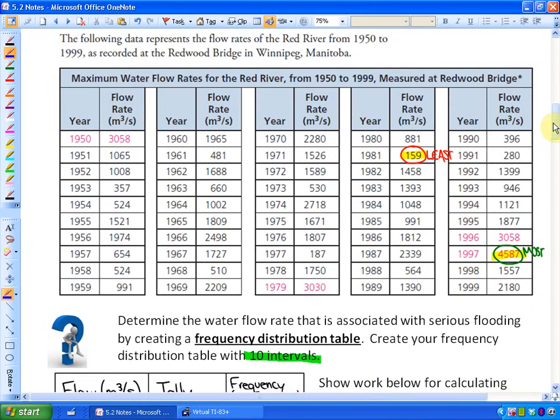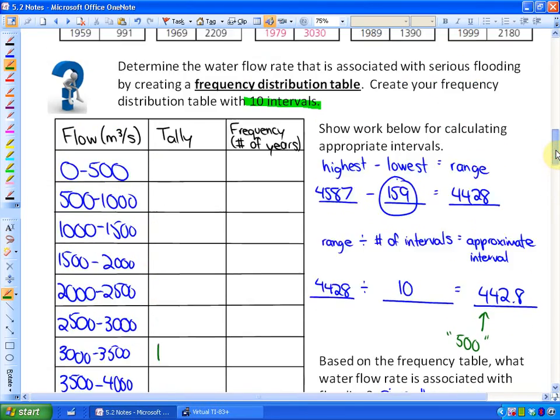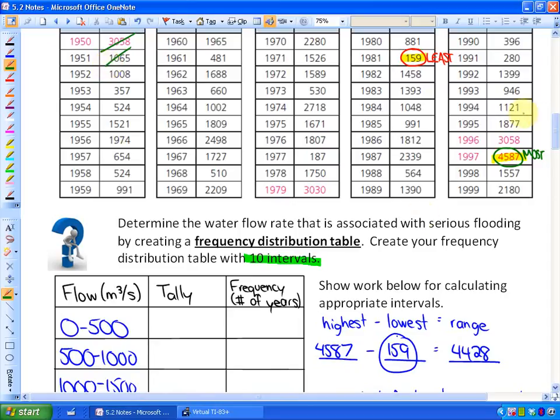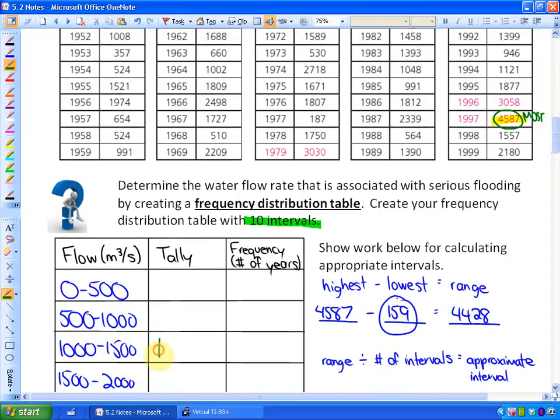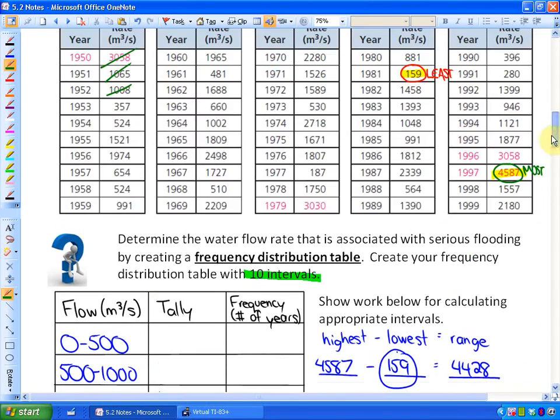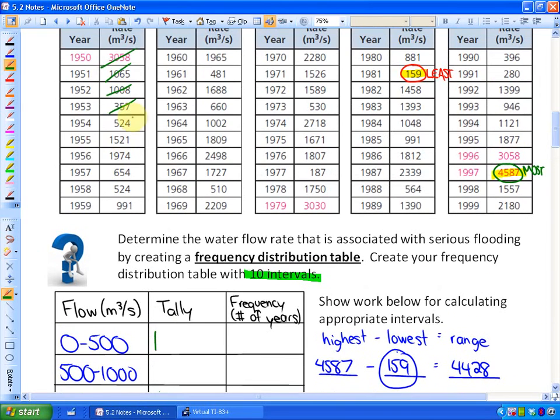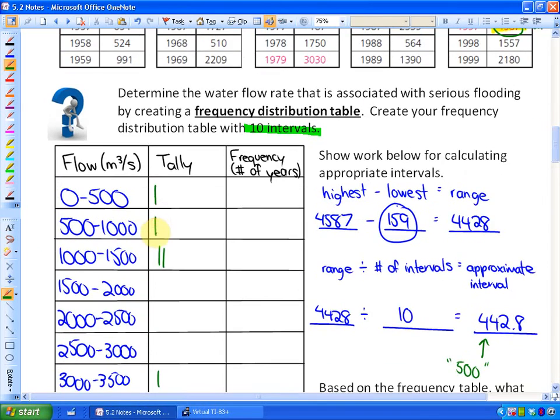So now we have to start tallying up our information or our data. So if we flip the page back here, I'll kind of get you started and then we'll go rather quickly. You'll want to cross this out as you go. So in 1950, 3,058, that would be in this interval right here. So I'm just tallying. There's tallying frequency. 1,065, that would belong right here. 1,008 would belong in this interval. So I'm just tallying it up. 357 would belong in the lowest interval. 524 would belong in this interval. You want to be really careful. At this point, you might want to pause it and try it on your own to try and tally up all the different flow rates because I'm going to show you the final solution and tally.